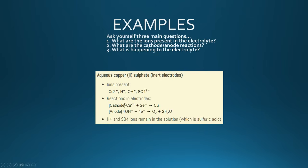For aqueous copper sulfate with inert electrodes, you have four ions present. At the cathode, you actually get copper being discharged rather than hydrogen ions, so copper metal is made — that's because copper ions have a greater tendency to discharge, as found on the electrochemical series. At the anode, hydroxide ions form oxygen. The hydrogen ions and sulfate ions remain in the solution, which is basically sulfuric acid.